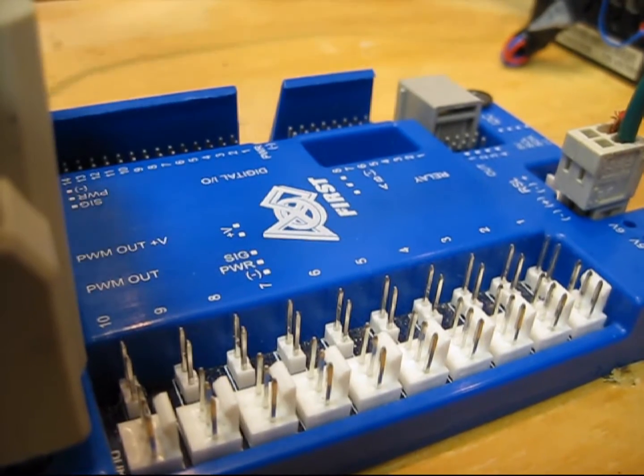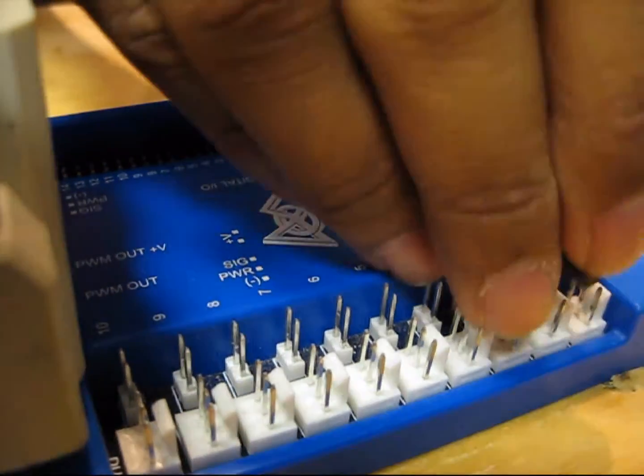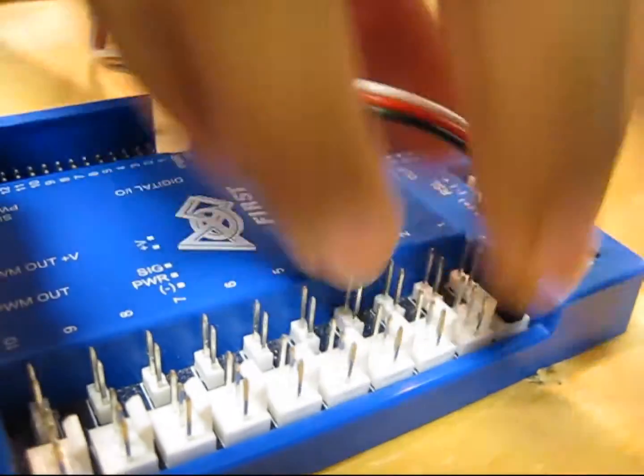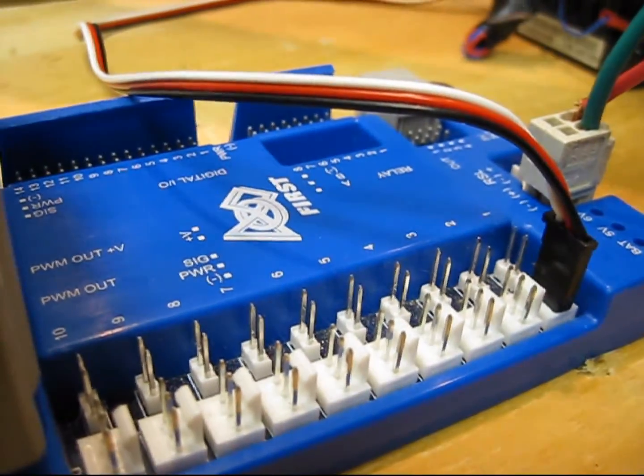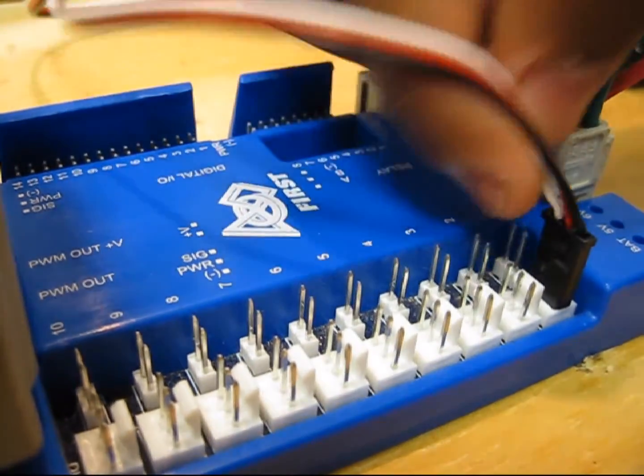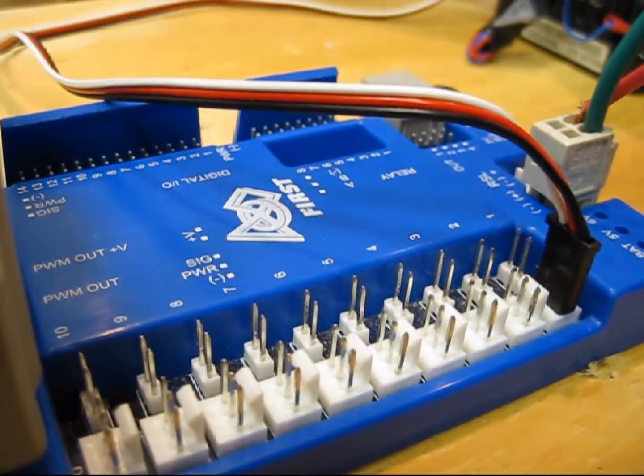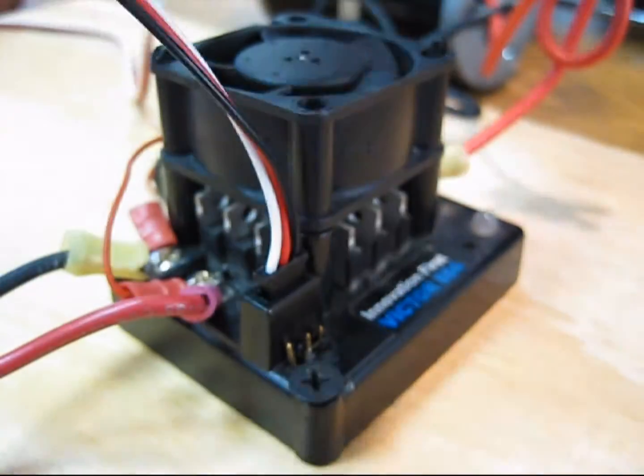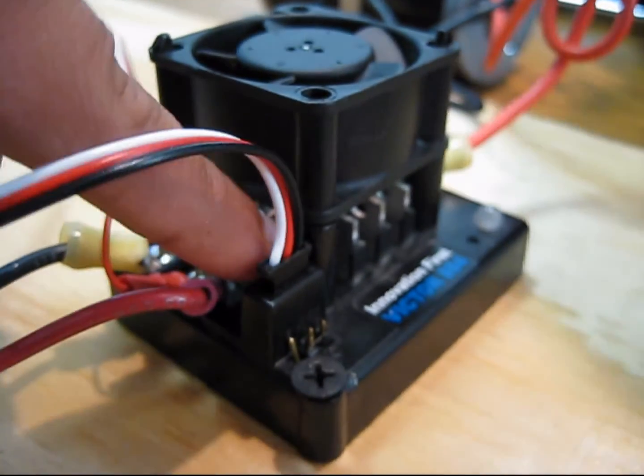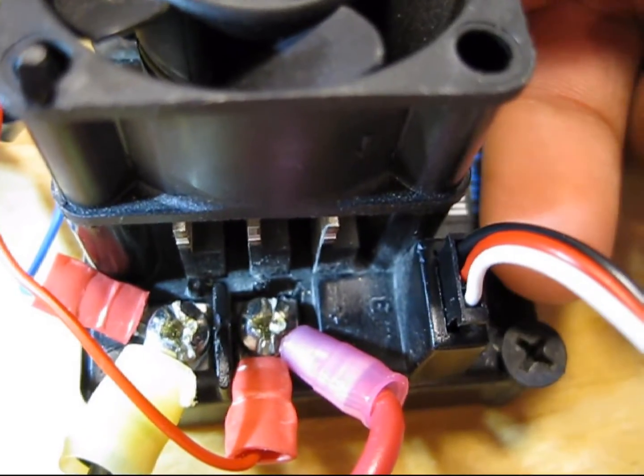Our next step is to connect the PWM cable from the digital sidecar to the victor. The white wire should be pointing to the signal on the digital sidecar. There's a B that signifies that this black wire should be pointing inwards.